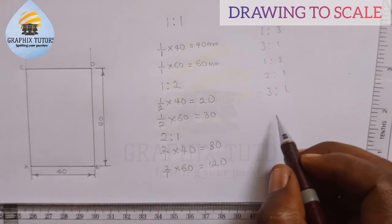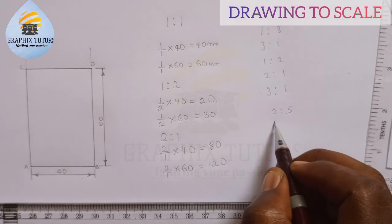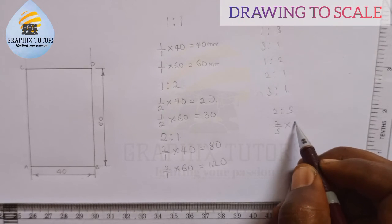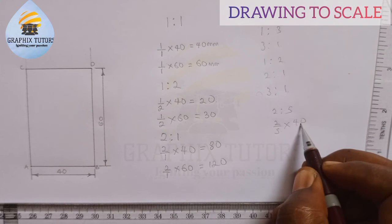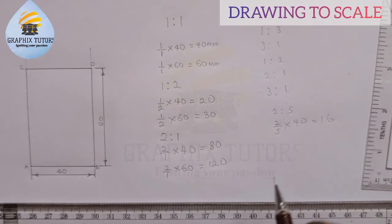So however, if you're given two is to five, what does it mean? Simple, two over five of the distance. Two over five of 40. Five into 40 is 8, 8 times 2 is 16.